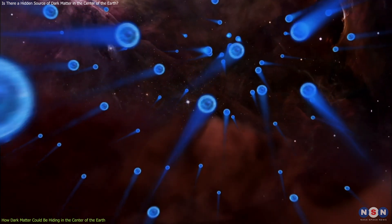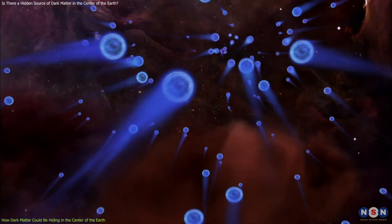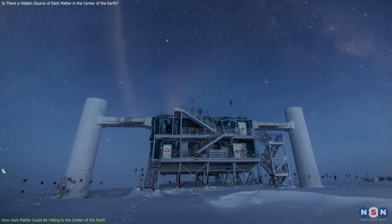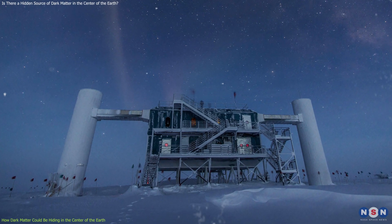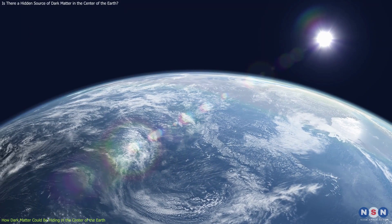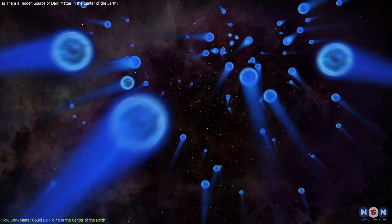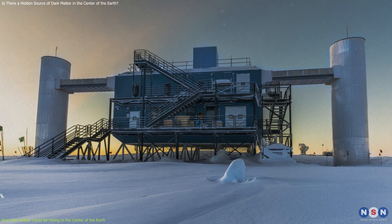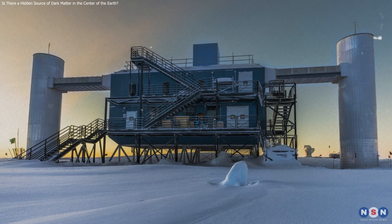If these collisions happen, they could produce neutrinos that would escape from the earth and reach us on the surface. This is what astronomers have been looking for using a unique detector called IceCube. Isn't that amazing? Dark matter could be hiding right under our feet, and we could use neutrinos to reveal its secrets. But how does IceCube work, and what did it find? Let's find out in the next section.